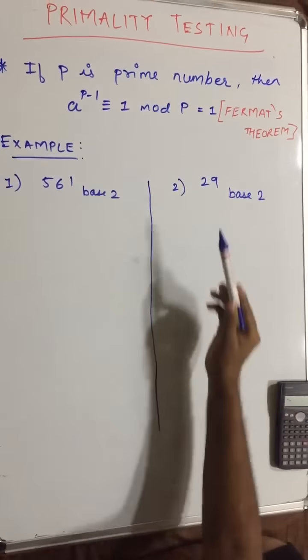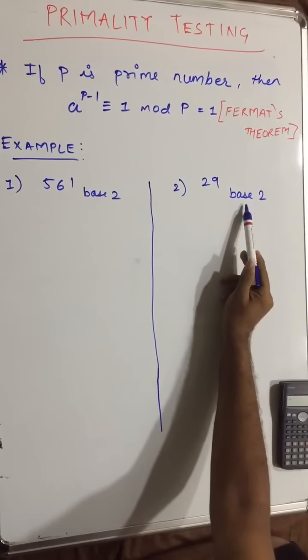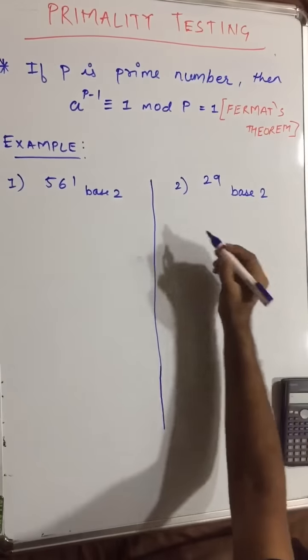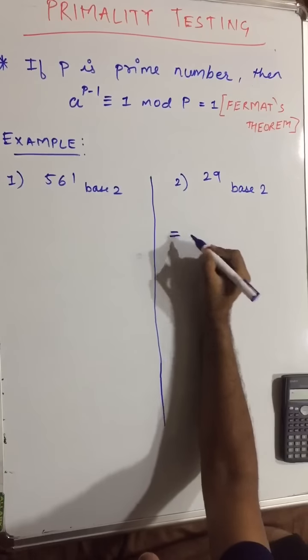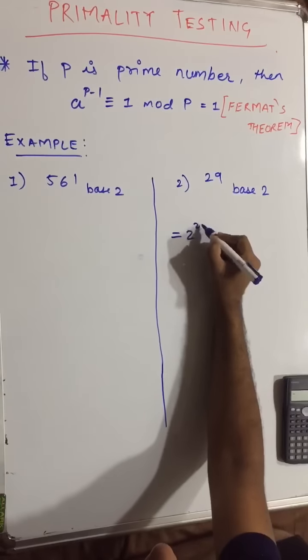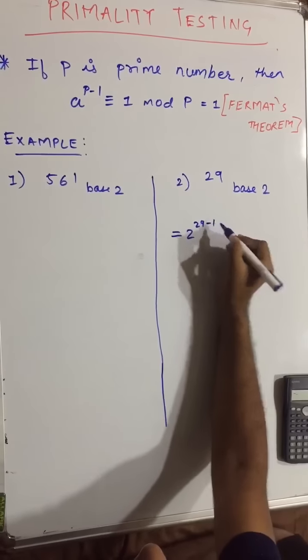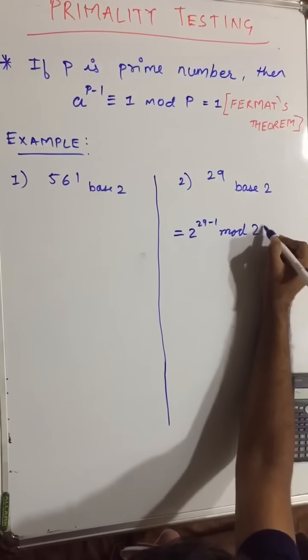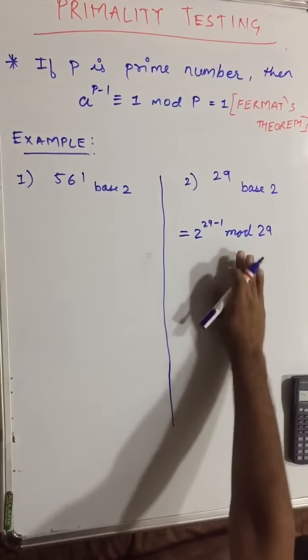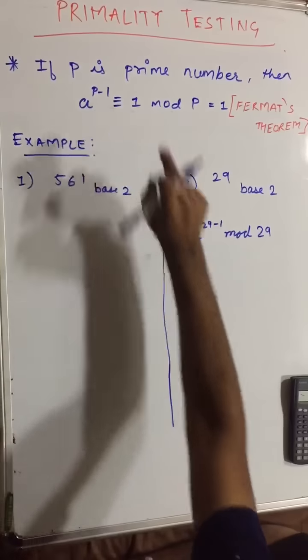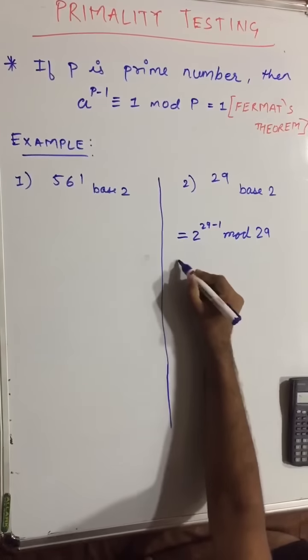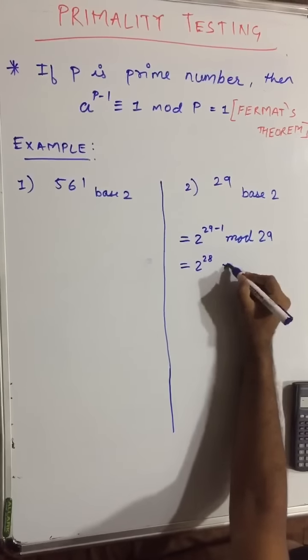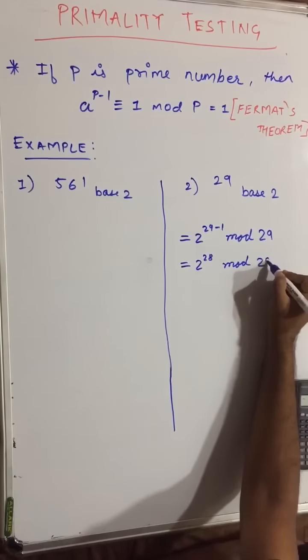So let us start solving the second example. We will be given in the form of any number base 2. So this we can write it as 2 raised to 29 minus 1 mod 29. Now we can relate this with this equation.